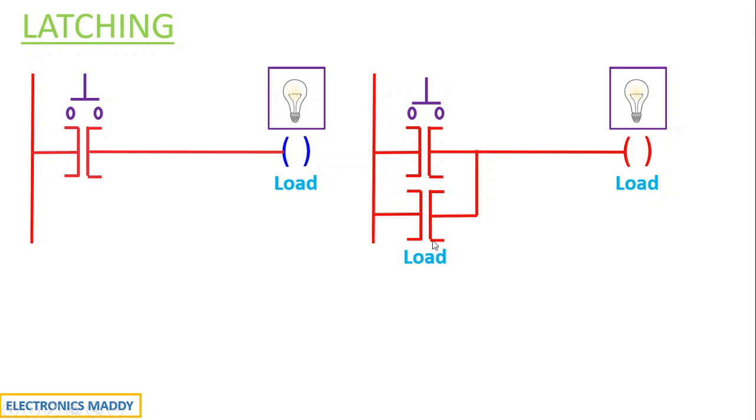How is this helpful? Let us take a look. When I press the push button switch, this coil gets energized, the rung gets energized, current starts flowing through the load, and the light starts glowing.